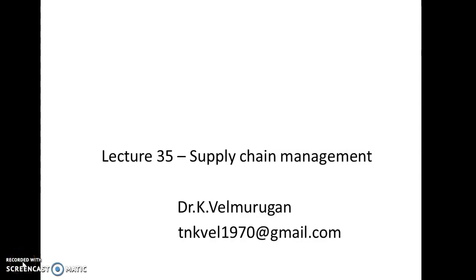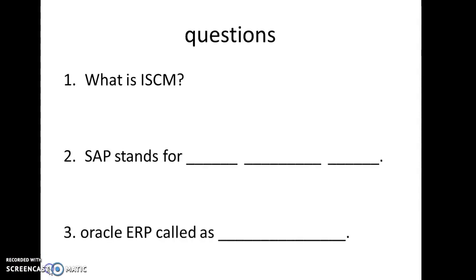Dear students, this is lecture 35 in supply chain management. Let us discuss the questions of the last lecture. The first question is: what is ISEM? The answer is ISEM means internal supply chain management. It deals with the internal operations within an enterprise or firm. It is one of the macro processes of the IT framework in supply chain management. The second question: SAP stands for systems, applications and products.